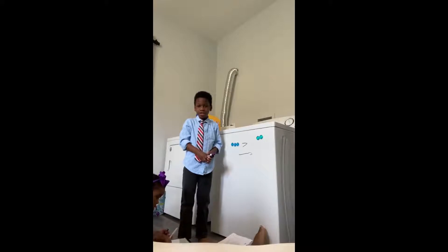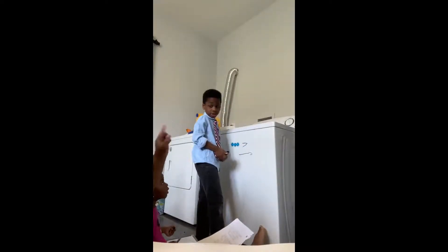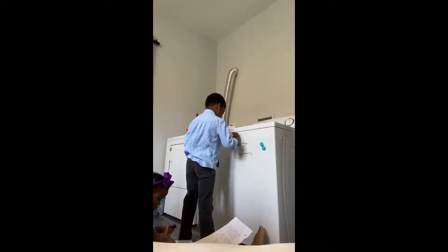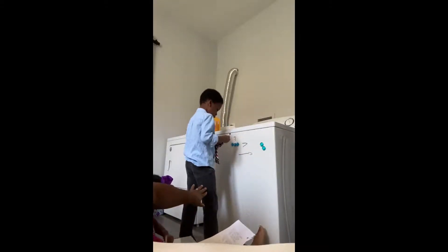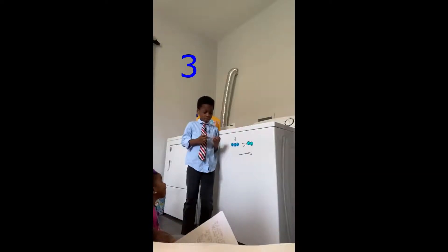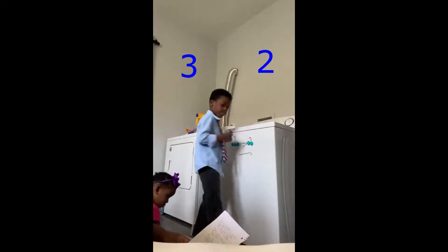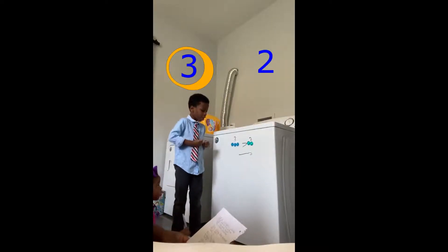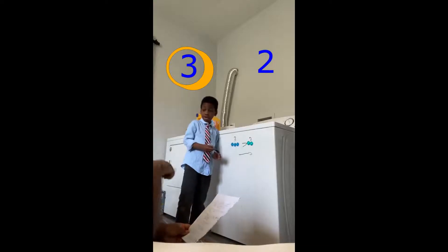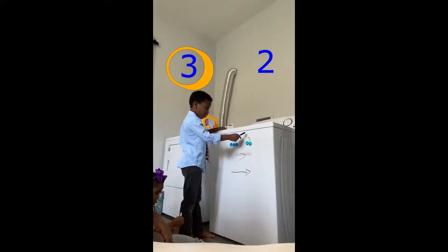How many blue magnets do I have? Three. Yes, that is correct — three. How many turquoise magnets do I have? Two. Yes, that is correct, I have two. Which number is bigger, three or two? Yes, that is correct. Three is bigger. So that means three is greater than two.